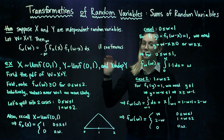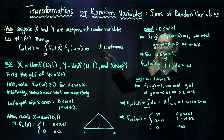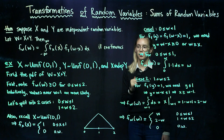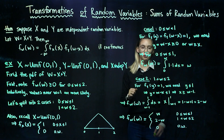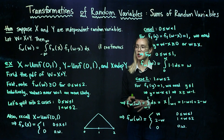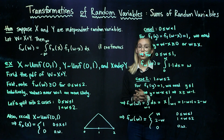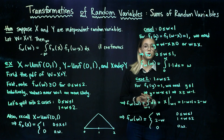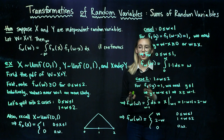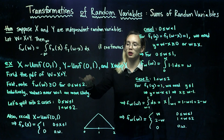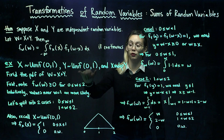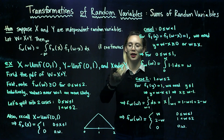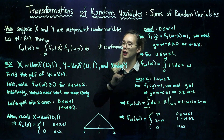Last video we talked about the discrete case; now we're going to focus in this video on the continuous case. Let's do an example. x is going to be uniformly distributed between 0 and 1, y is also going to be uniformly distributed between 0 and 1, and x is going to be independent of y.